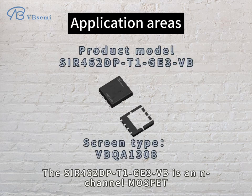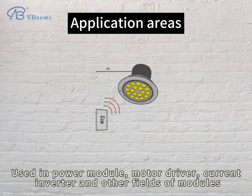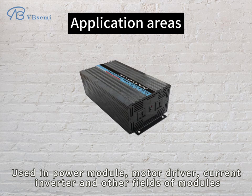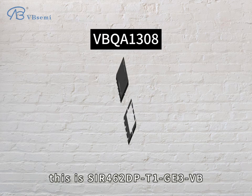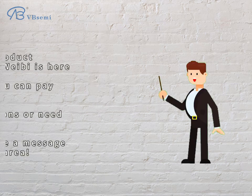The 446R DPT-EGE-3VB is an N-channel MOSFET used in power modules, motor drivers, current inverters, and other types of modules.